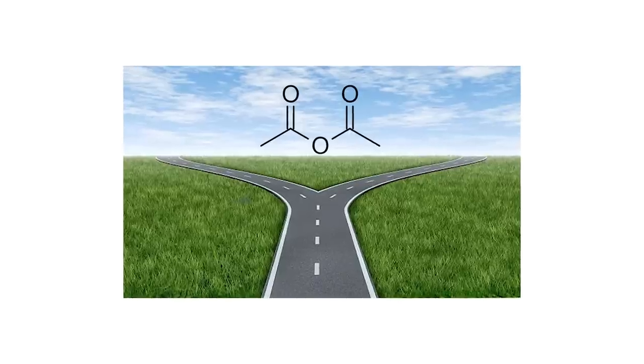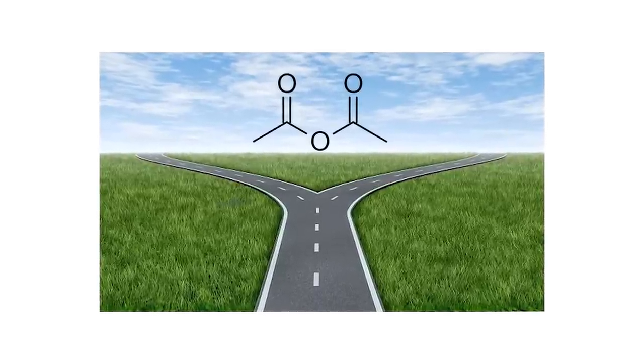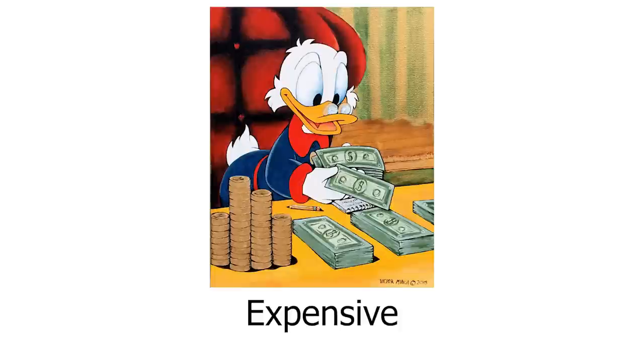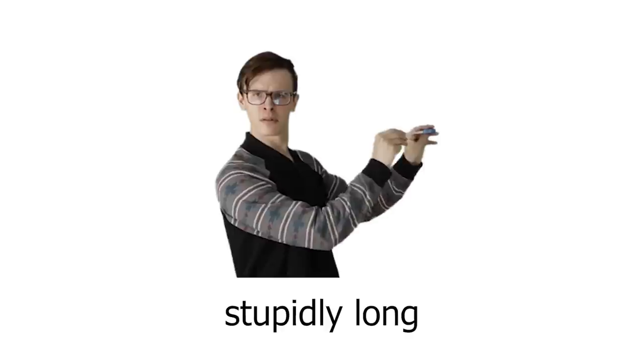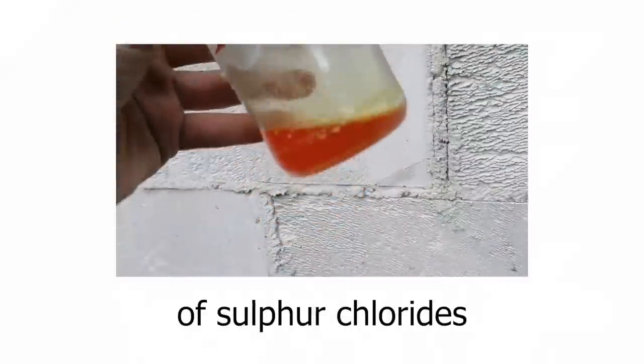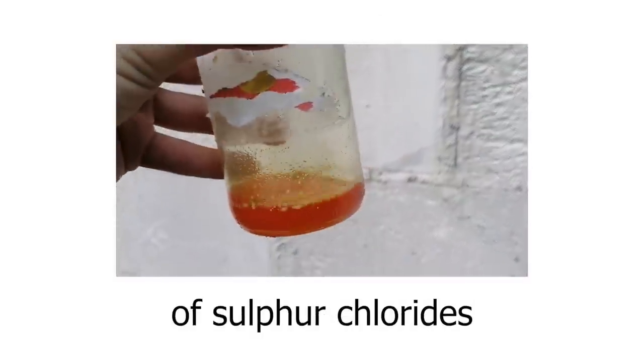Acetic Anhydride has a lot of interesting uses like plastics, perfumes and… other… FBI, open up! So there are two roads to getting the Acetic Anhydride molecule. One is expensive and easy, and the other one is extremely toxic, stupidly long, and because of the presence of sulfur chlorides, the whole process smells like shit.